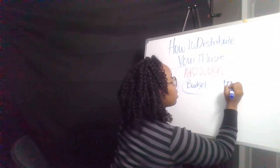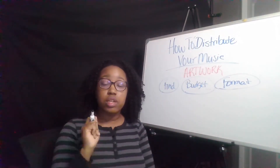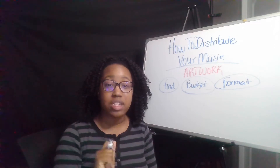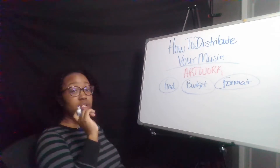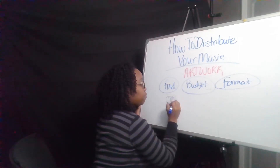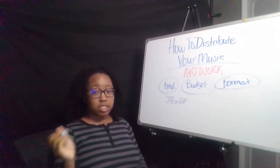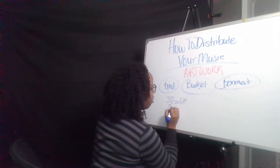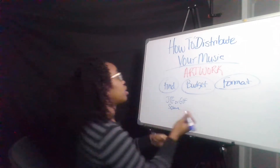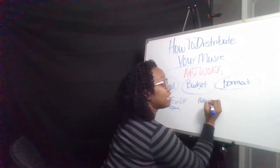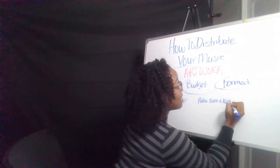The other thing that's important is format. A lot of people don't talk about this because sometimes we forget — we just assume that we all know, but it's really important to have your art format in check. You definitely want to do JPEG or GIF for your formats. You also want to make sure it's a perfect square, and you want to have a ratio of at least 1600 by 1600 pixels in size.